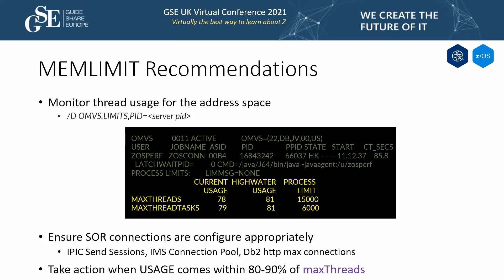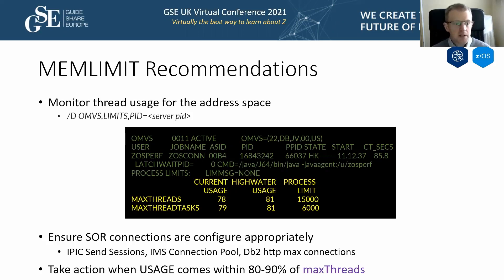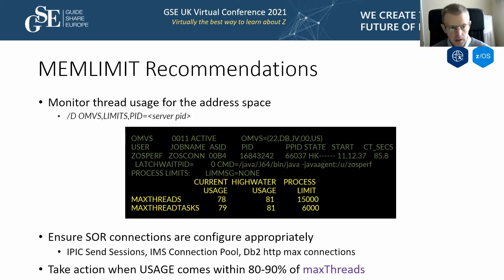Keep an eye on thread usage within the address space. Monitoring tools and the OMVS display command show current and high-water thread usage, letting you take action by setting max threads before usage becomes critical. Also ensure connection pools and session pools for CICS, IMS, and DB2 backends are large enough to support the number of threads allowed into the server.